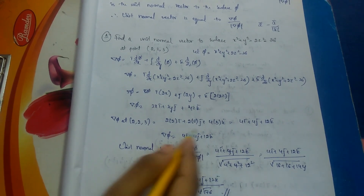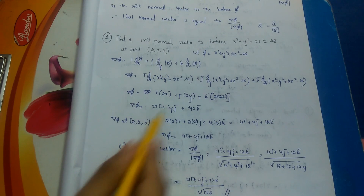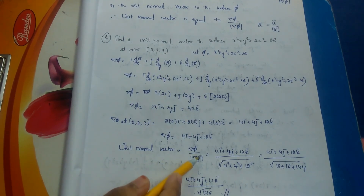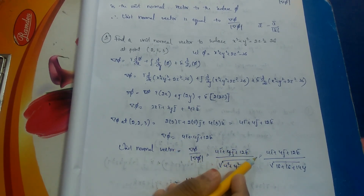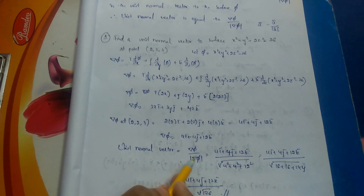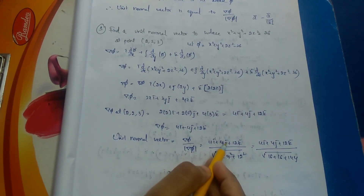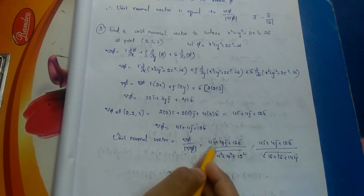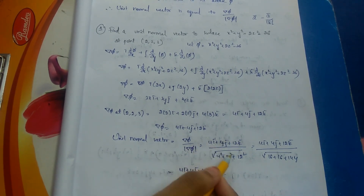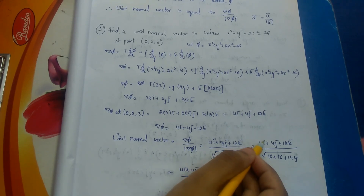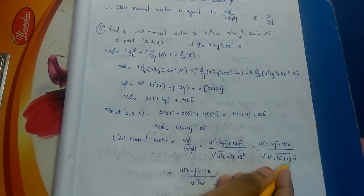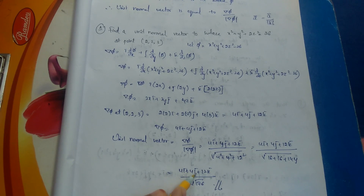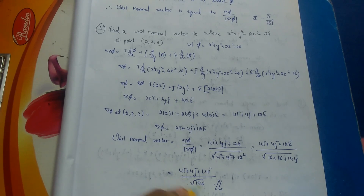So ∇φ at (2, 2, 3) is 4i̅ + 4j̅ + 12k̅. The unit normal vector = ∇φ / |∇φ| = (4i̅ + 4j̅ + 12k̅) / √(4² + 4² + 12²) = (4i̅ + 4j̅ + 12k̅) / √(16 + 16 + 144) = (4i̅ + 4j̅ + 12k̅) / √176. This is the unit normal vector to the surface φ.